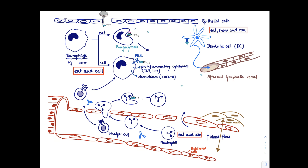The effector B cell is also called a plasma cell. Now, as we've broadly introduced the T and B cells, we can go to the lymph node and think about what happens. I want to split it into two parts: first, how are T cells activated, and then, how are B cells activated.